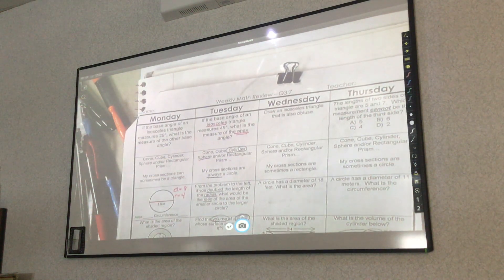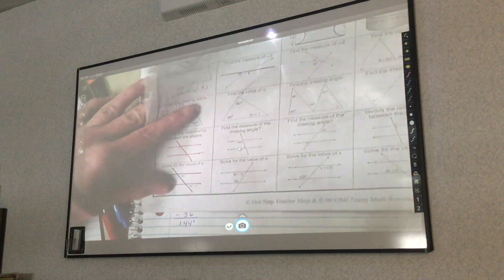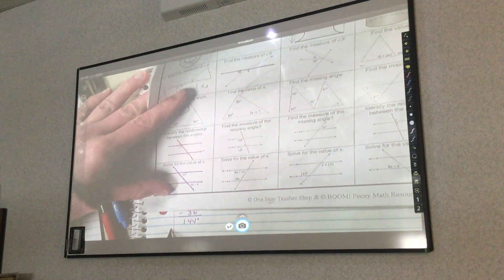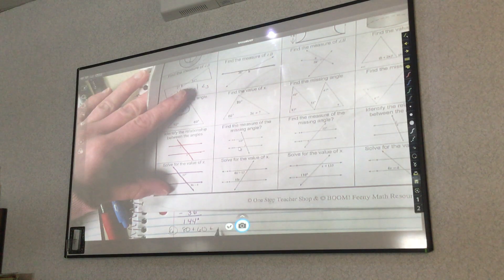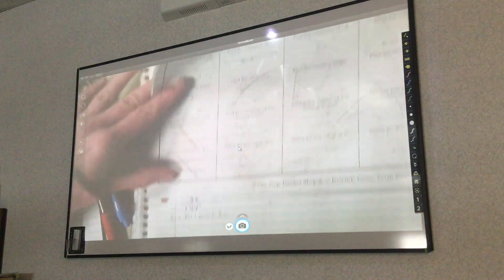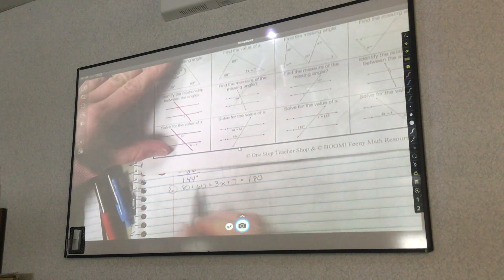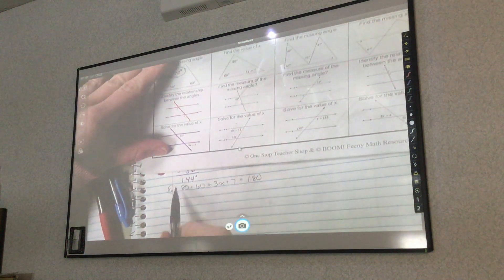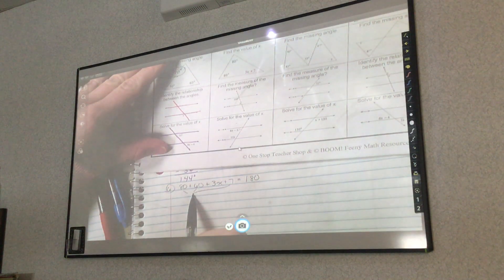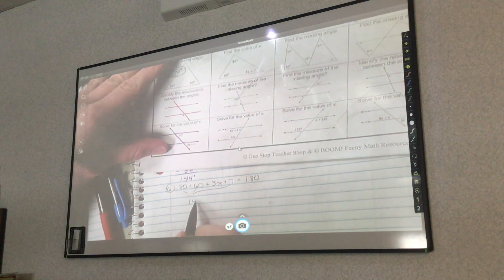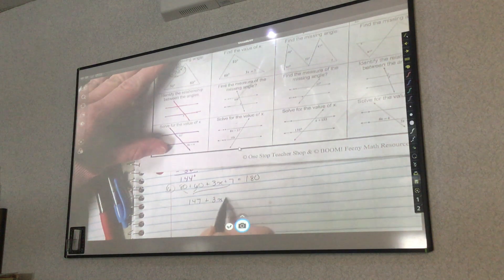Finding the value of X. We add all the angles up. 80 plus 60 plus 3X plus 7 equals 180. So I'm going to add my 80, 60, and 7, and that comes to 147 plus 3X equals 180.